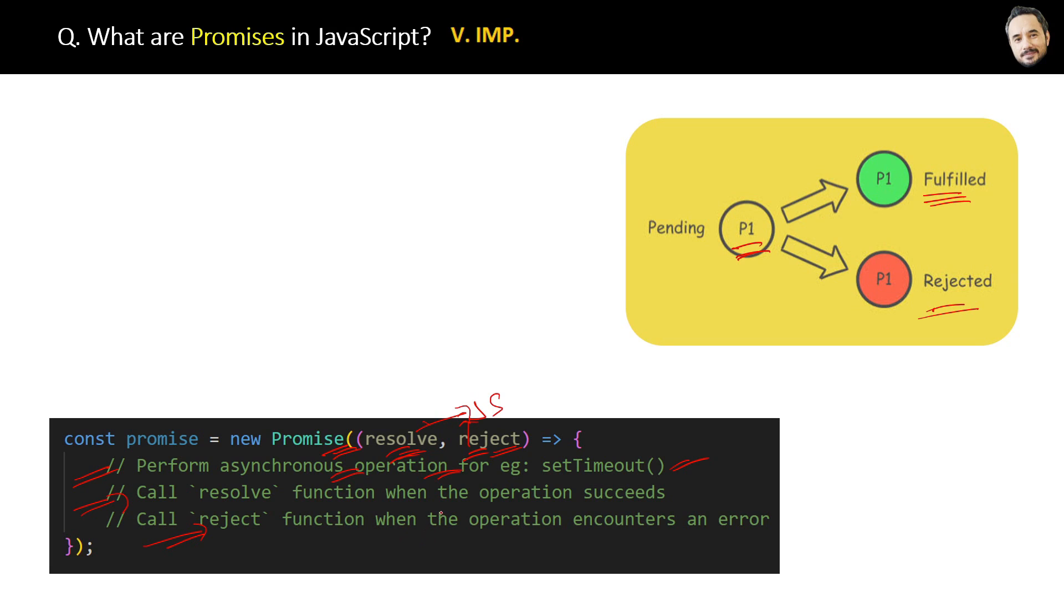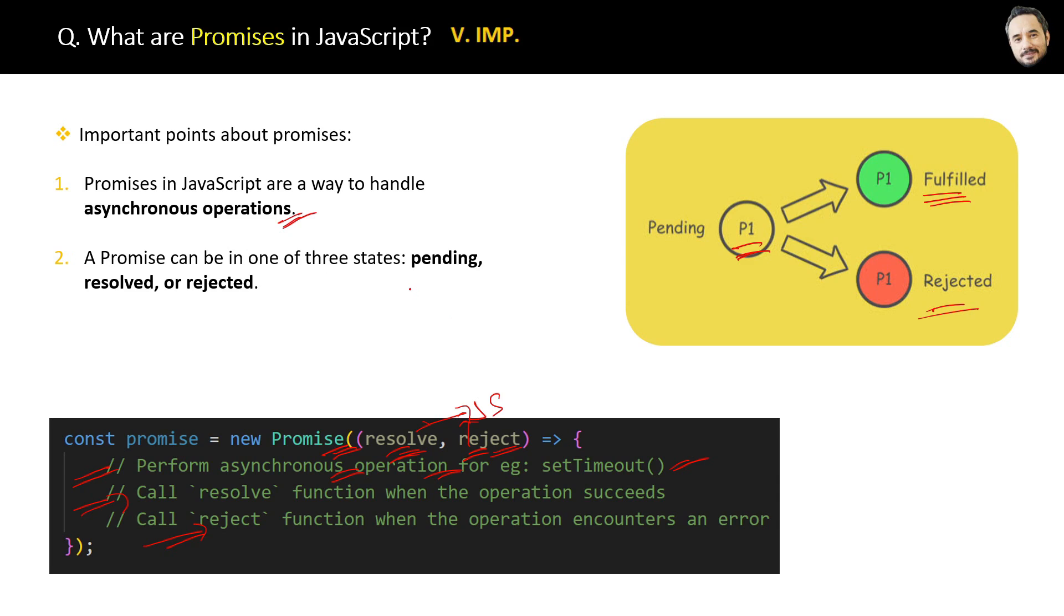Let's conclude with some important points about Promises. Promises in JavaScript are a way to handle asynchronous operations. A Promise can be in one of three states: pending, resolved, or rejected. When the Promise is running or executing, it is in a pending state. After getting the result, it will be in either a resolved or rejected state.